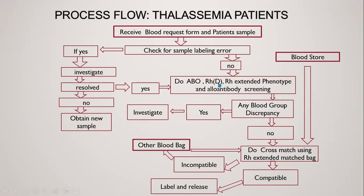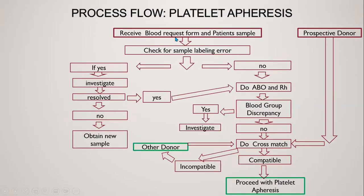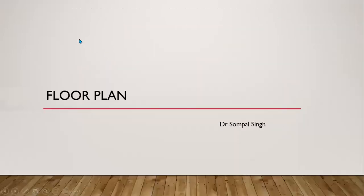This is the process flow for platelet apheresis. For an institution where apheresis is directed to a particular recipient, we have a prospective donor and recipient samples. The recipient sample and prospective donor sample are cross-matched, and if compatible, we proceed for apheresis. If not compatible, we ask for another donor.